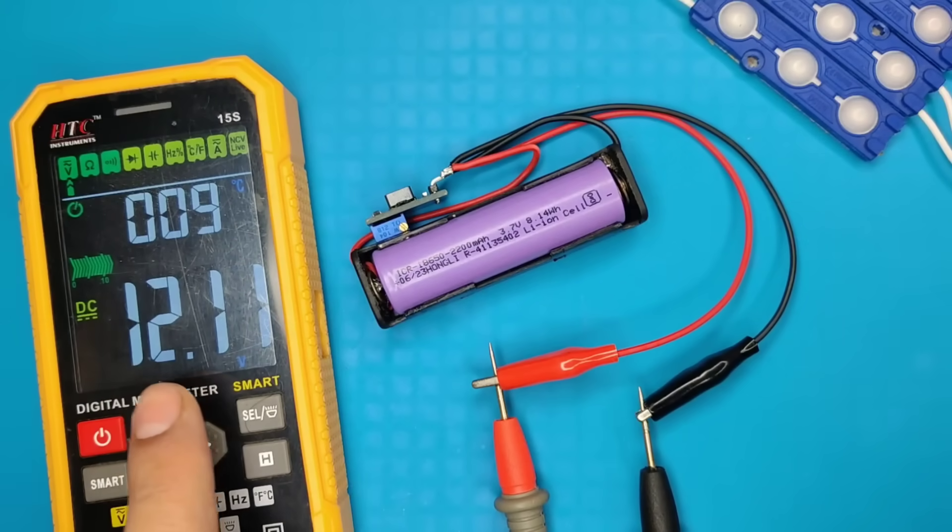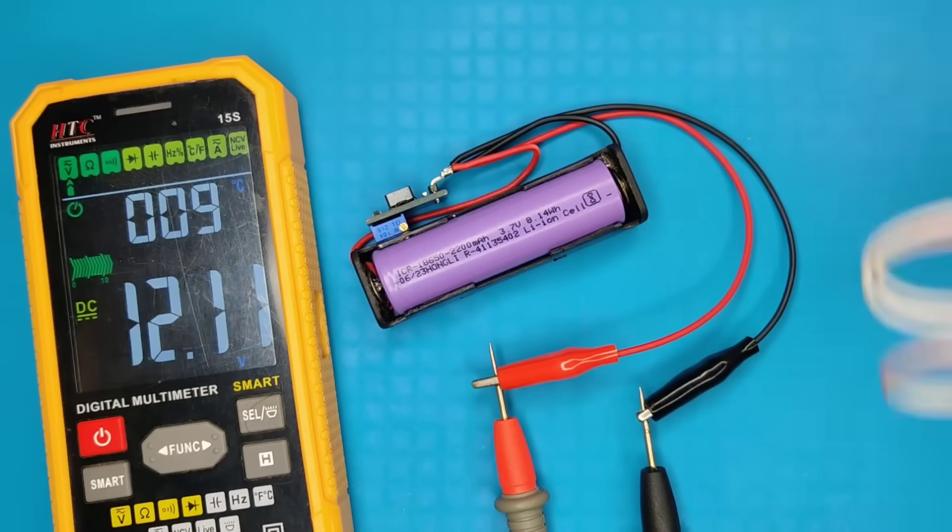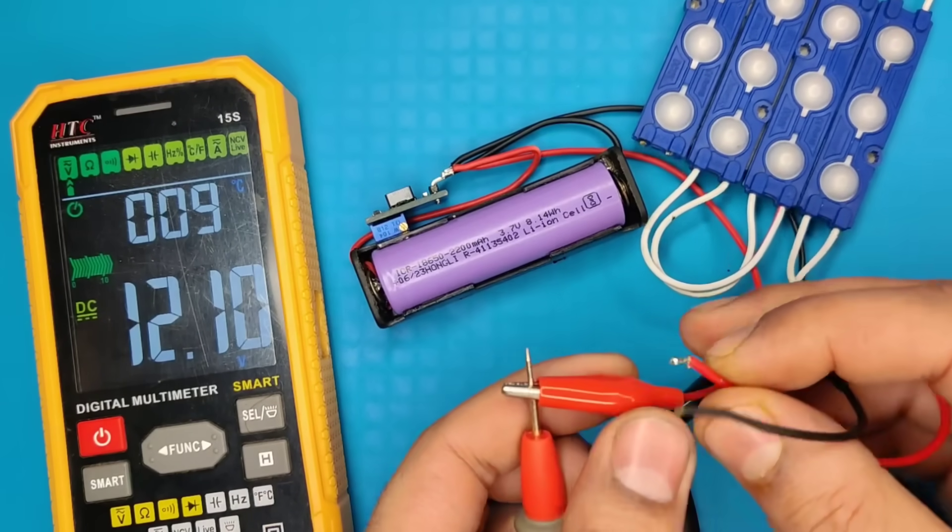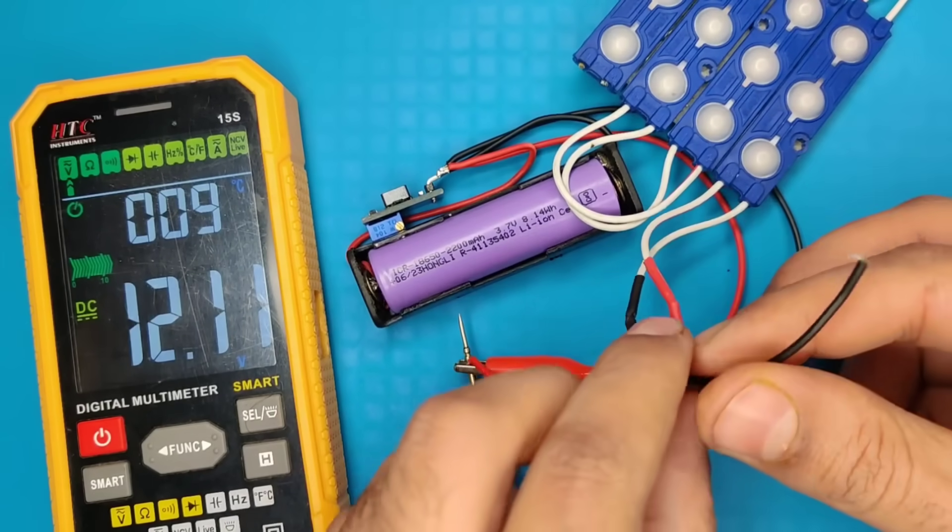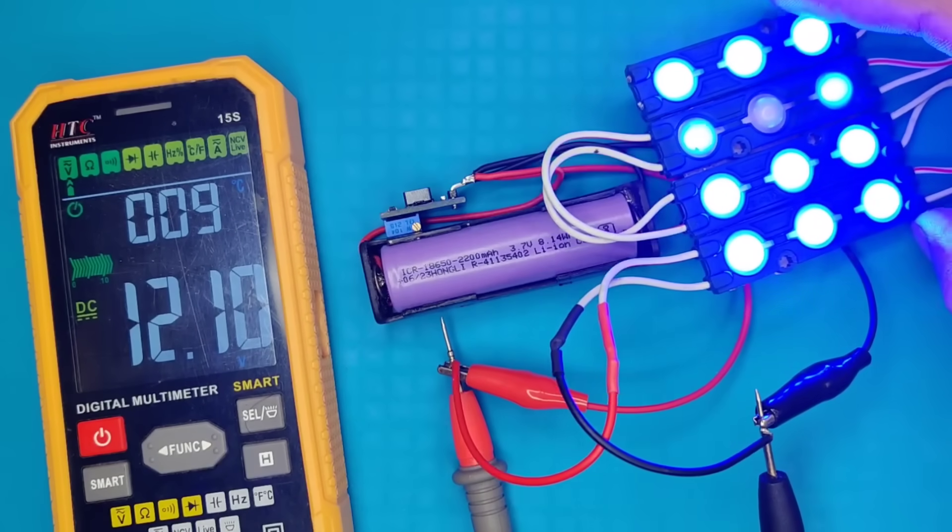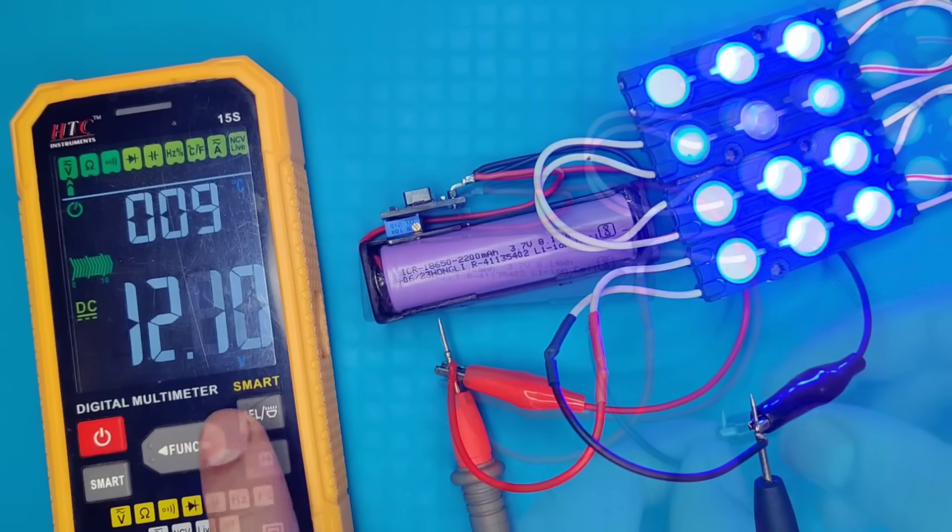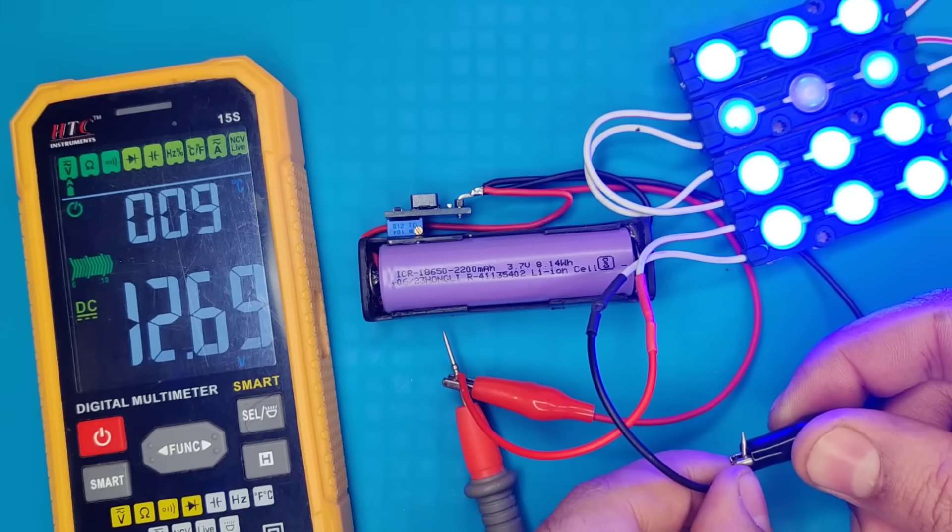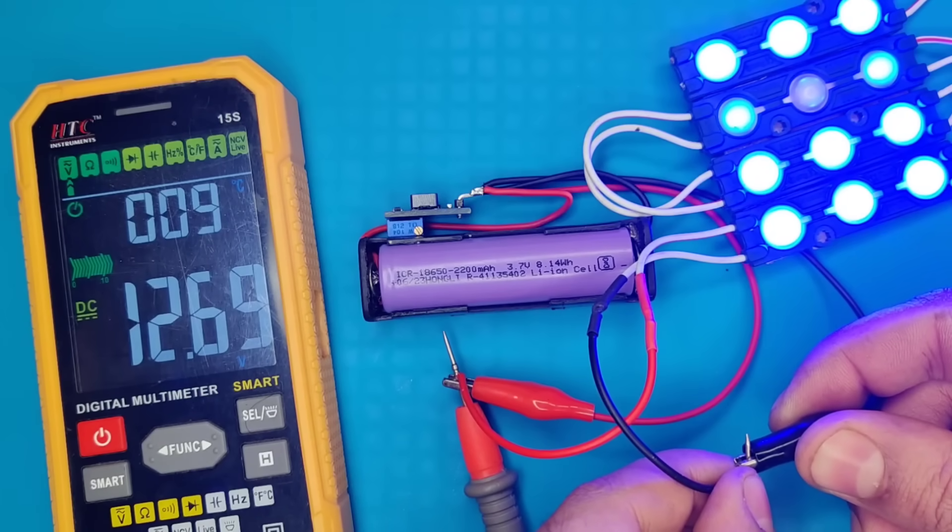As you can see output voltage is at 12 volts, now connect this LED module. As you can see LED module is glowing very bright and also voltage is not dropping when load is connected. It is automatically adjusting the frequency and providing constant output.